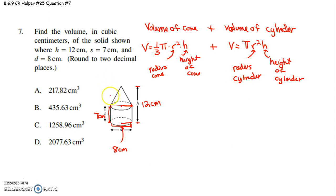So, once you find your volume of your cone and the volume of your cylinder, you'll add them together and then we'll round to the nearest hundredth. Okay. So, let's find our volume of our cone.